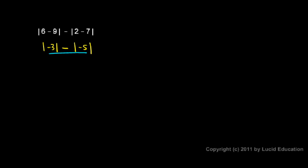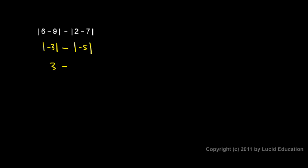Now I'm going to take this and rewrite it again, but this time I'm going to perform the absolute value operation and remove those absolute value signs. The absolute value of negative 3 is 3, and then I have a minus, and then the absolute value of negative 5 is 5. So the original problem is equivalent to 3 minus 5, and 3 minus 5 is negative 2.